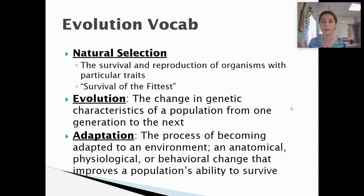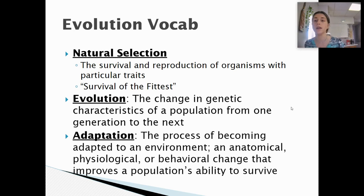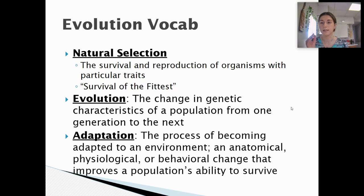It's essentially the survival of the fittest — whichever organism is most fit to survive in their environment will be able to survive and reproduce. The next term is evolution, and this is the change in genetic characteristics of a population from one generation to the next. Because of natural selection, those organisms with good traits will pass those traits on, and those without will not survive to pass their traits on to the next generation.